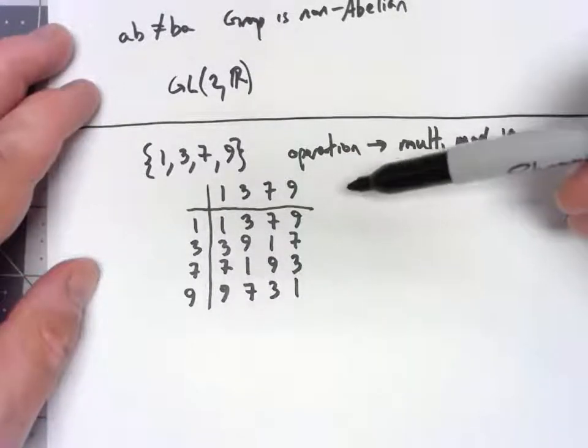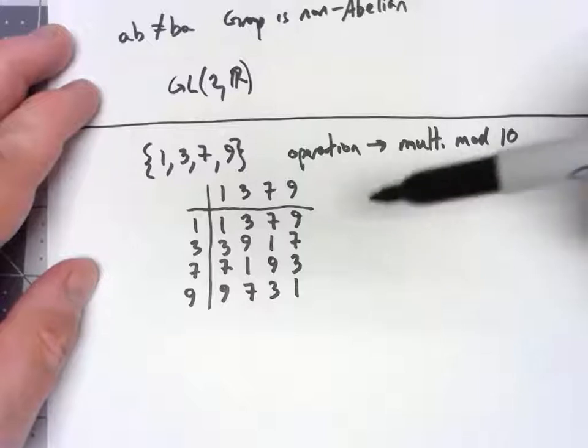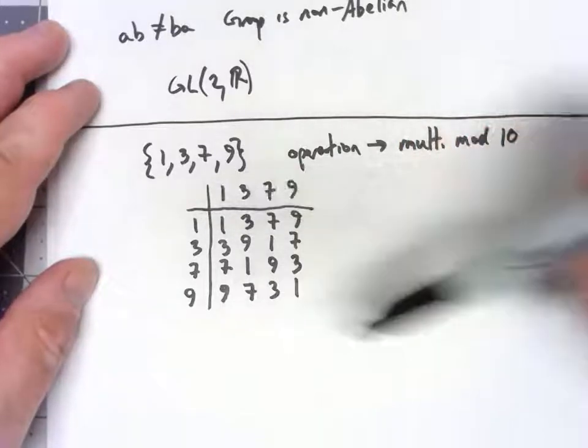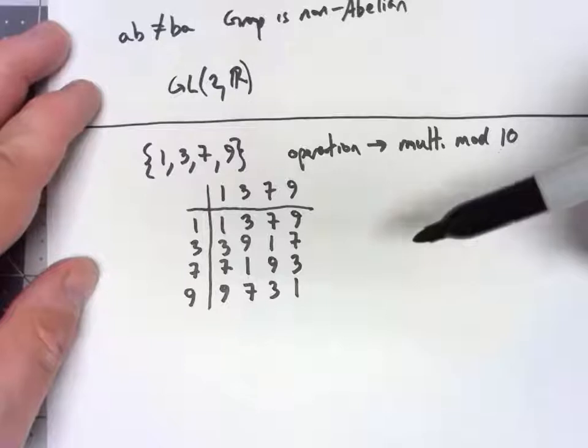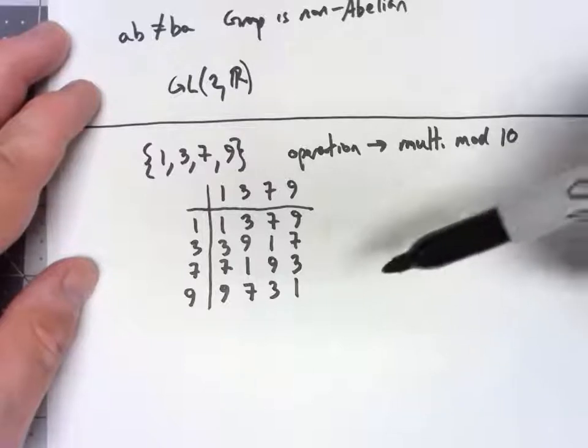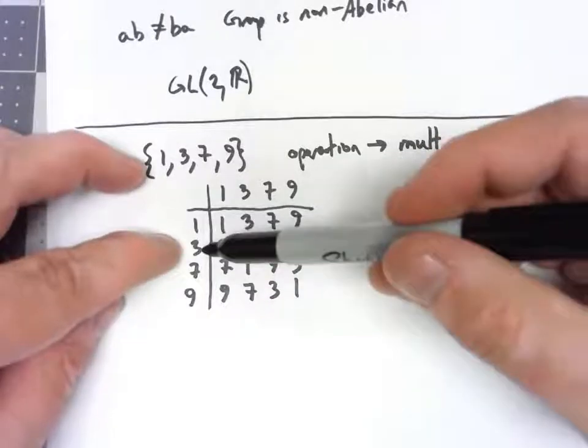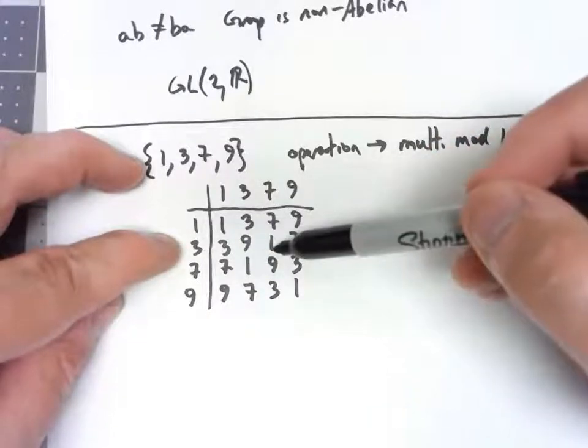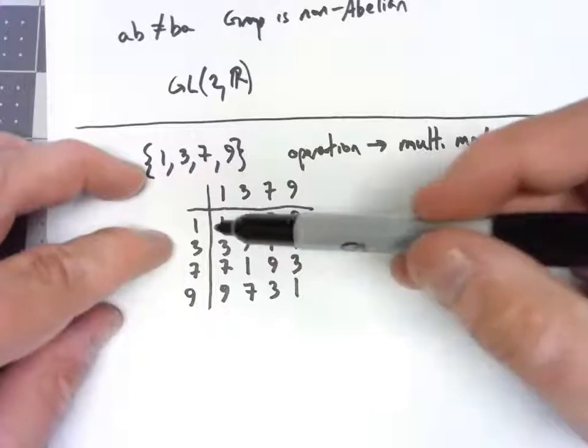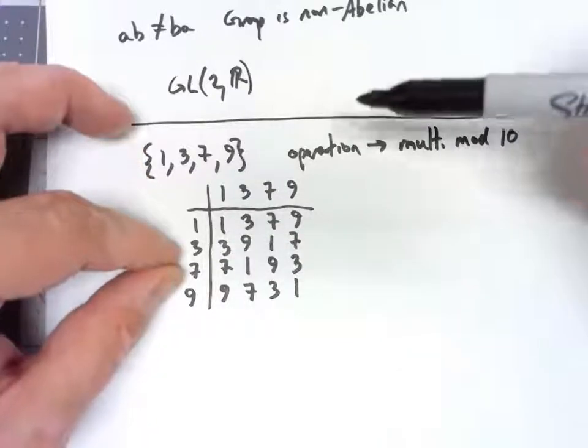From this Cayley table we can see a few things. First of all, 1 is an identity. Not a big surprise, multiplying by 1 doesn't change what you're multiplying by. We can also see that every element has an inverse. 3 times 7 gives us 1, and 7 times 3 gets us 1, so 3 and 7 are inverses of each other.